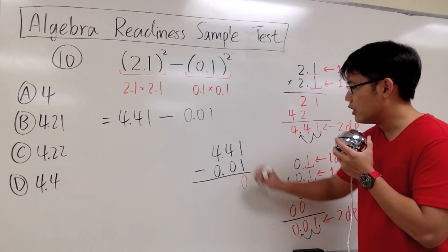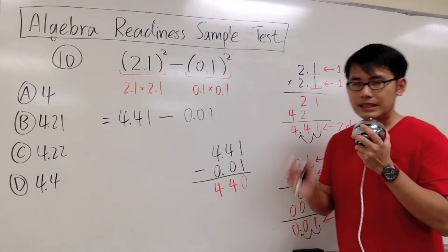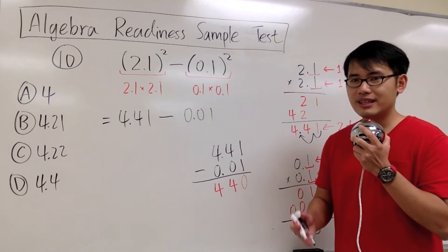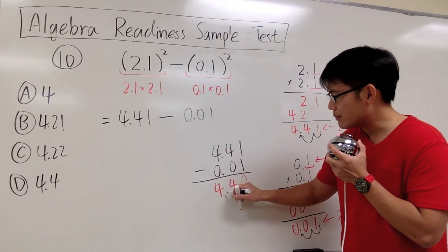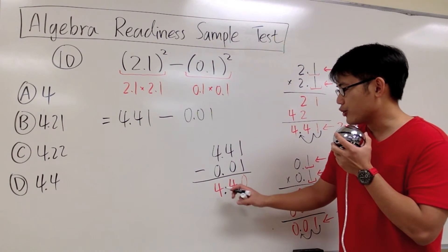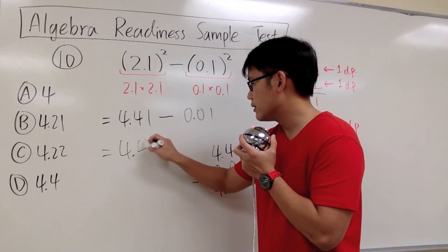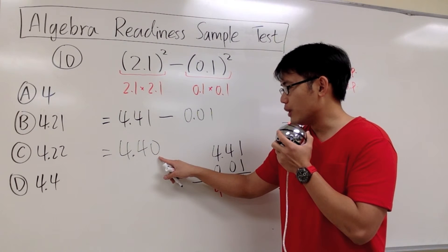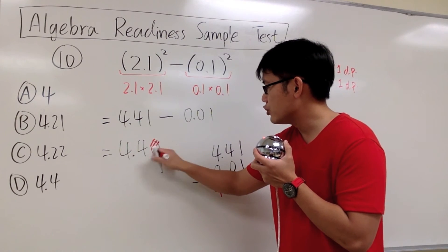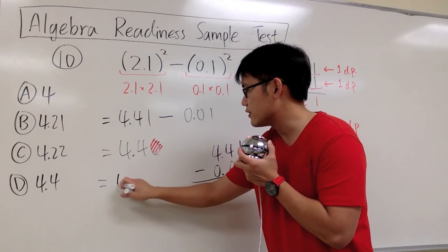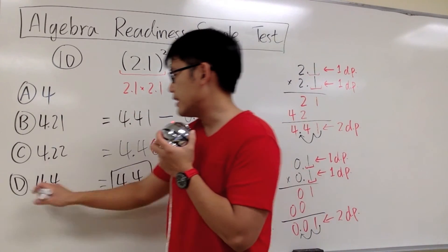1 minus 1 gives us 0. 4 minus 0 gives us 4. And 4 minus 0 is once again 4. For subtracting or adding decimal numbers, at the end we just line up with the decimal point, so we label the decimal point right here. The answer is going to be 4.40. But this trailing 0 after the decimal point doesn't really matter, so you don't need to write it down. We can just write the answer as 4.4. And this right here is the answer — that's answer choice D.